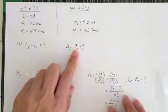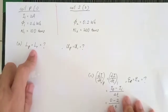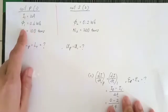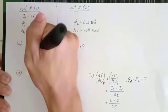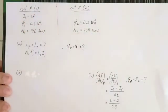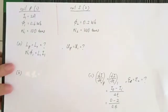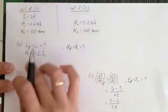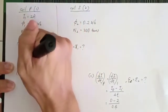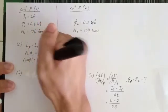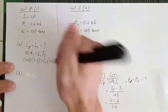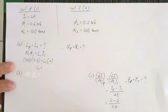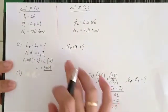For question A, to find the self-inductance L1, we use the formula N1·φ1 = L1·I1, since everything is happening in coil one only. Substituting: N1 is 100, φ1 is 0.6, and I1 is 2 amperes. So L1 equals 30 henries.